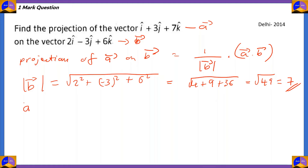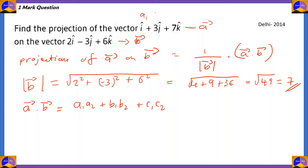Now how do we find the value of a dot b? For the dot product of two vectors we have the working rule: a1·a2 + b1·b2 + c1·c2, where a1 and a2 are the x components, b1 and b2 are the y components, and c1 and c2 are the z components of the two vectors.